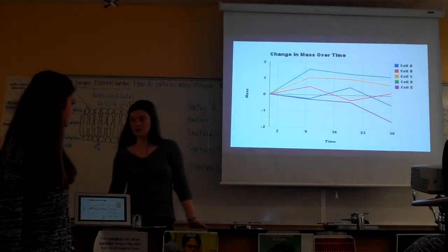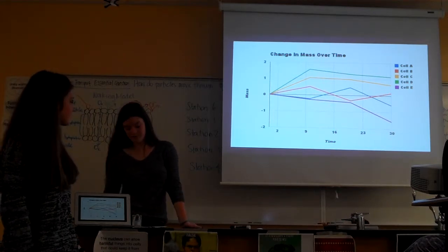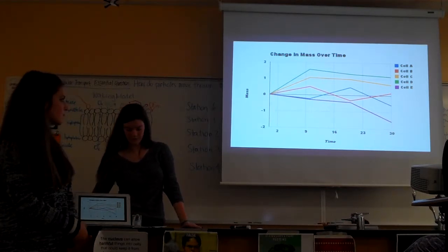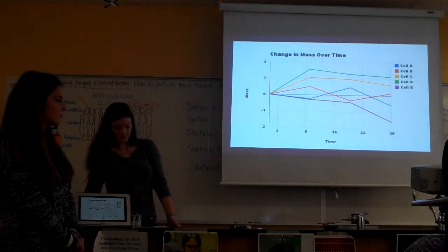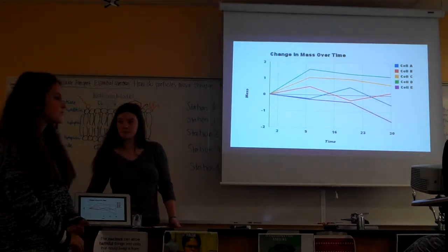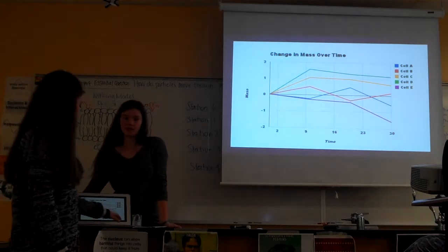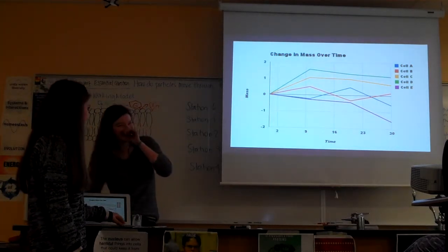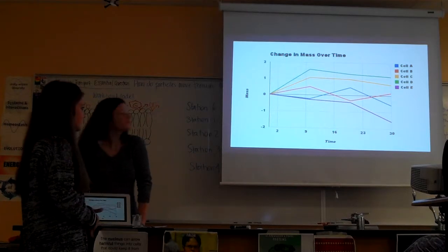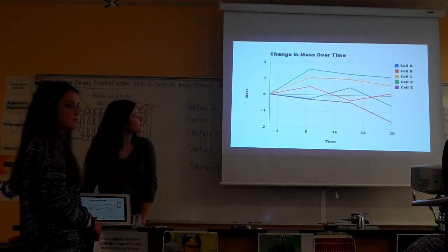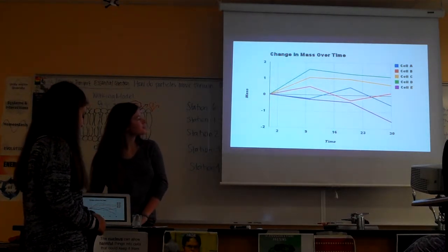So just to clarify, the green cell had 80% glucose inside the cell, not in the beaker. In the beaker was water. In cell E the glucose was outside of the cell and the water was inside of the cell. And as you can see it decreased over time.